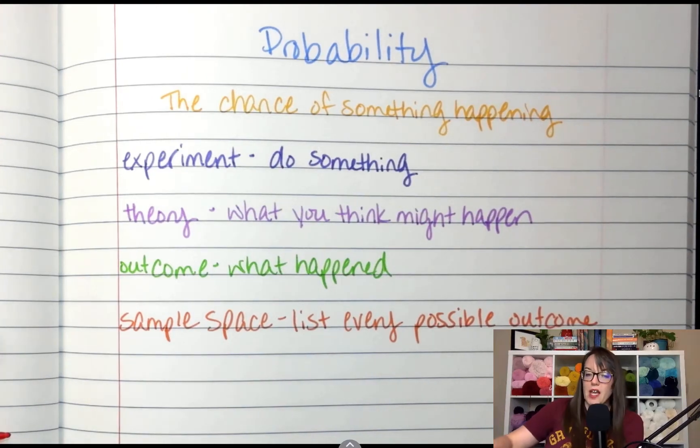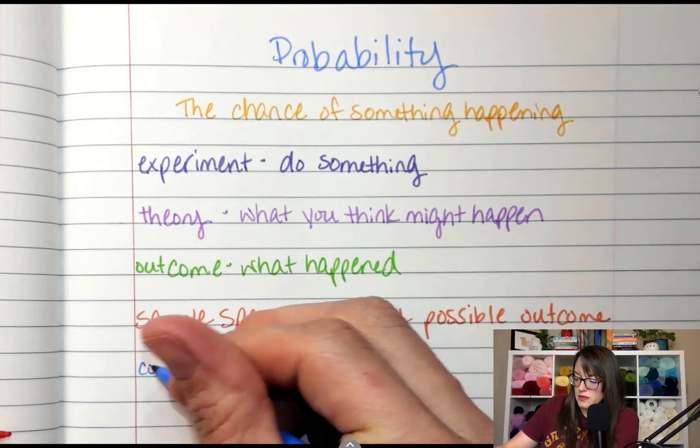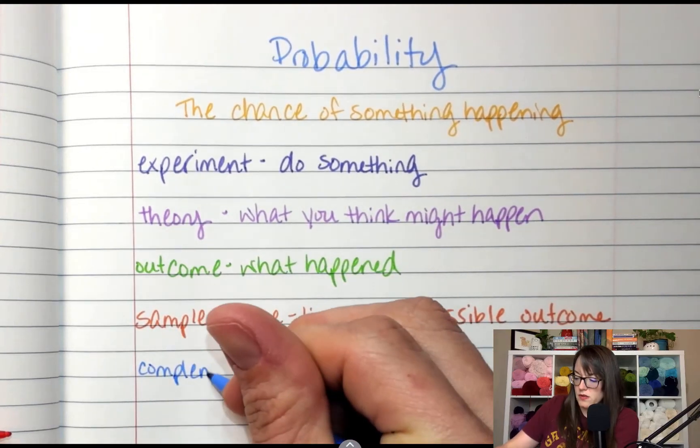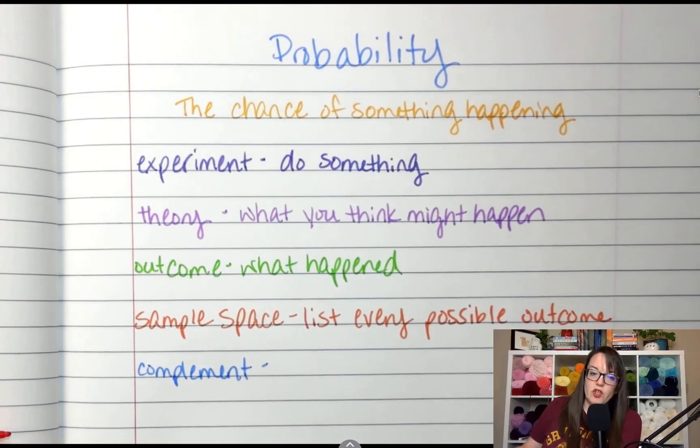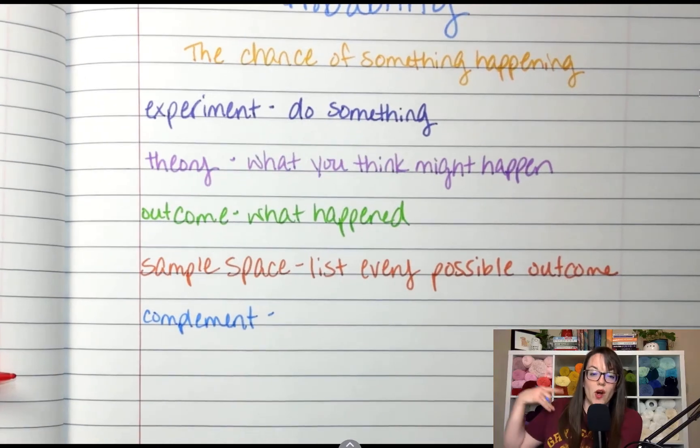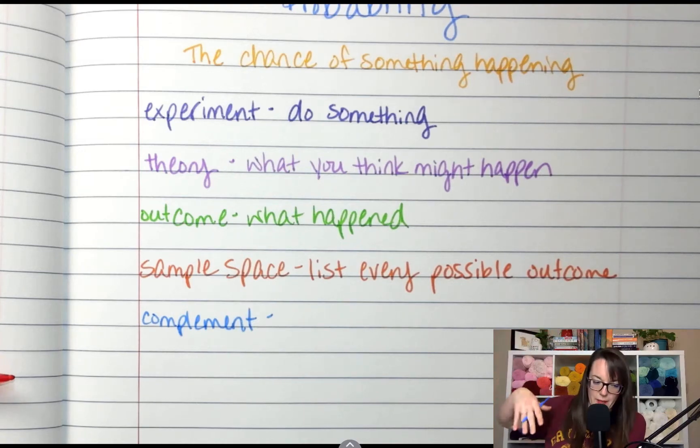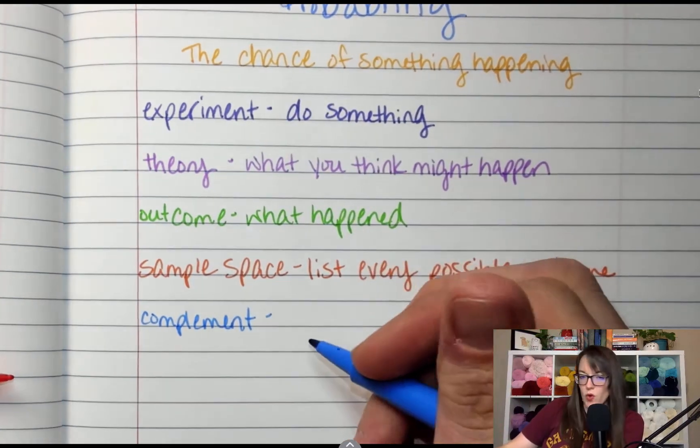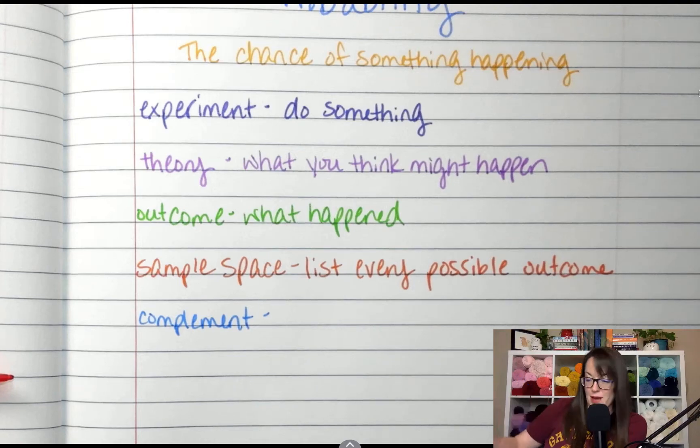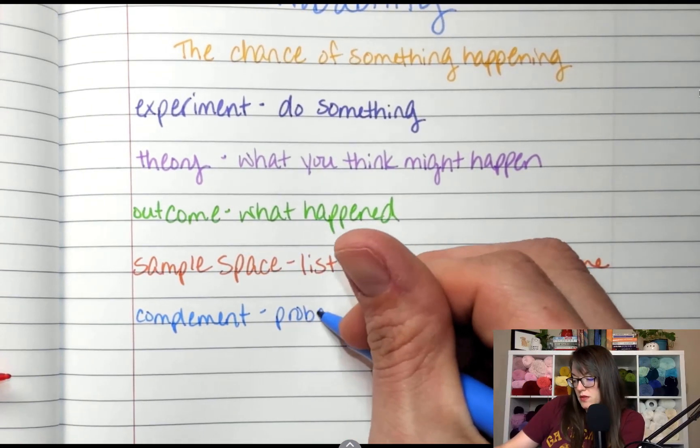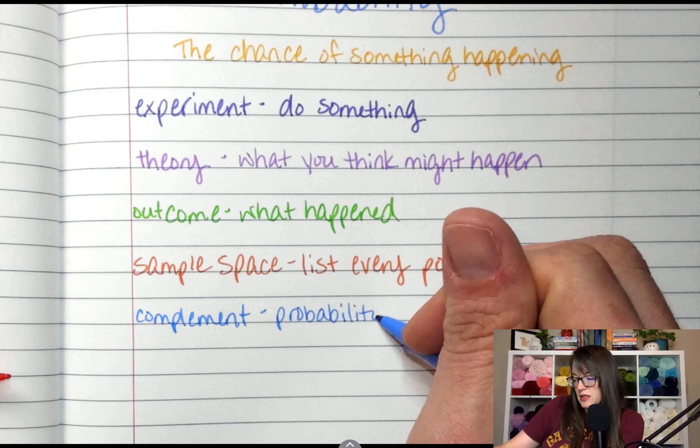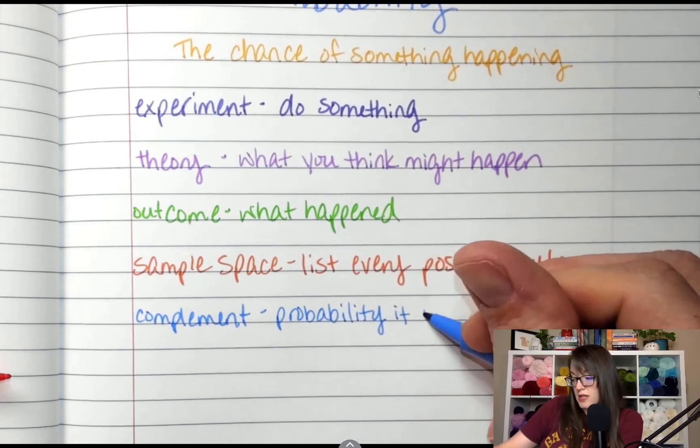And then there's something called a complement with an E. Complement. If you are trying to figure out what you want to happen, the complement is the likelihood that it won't happen. Or the probability of what you don't want to happen. Probability it won't happen.